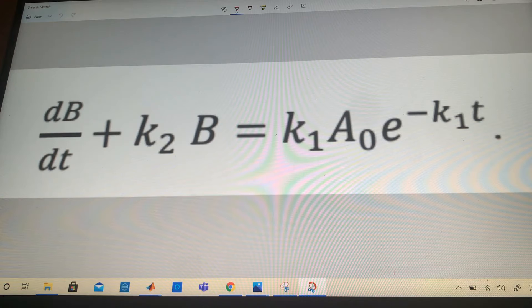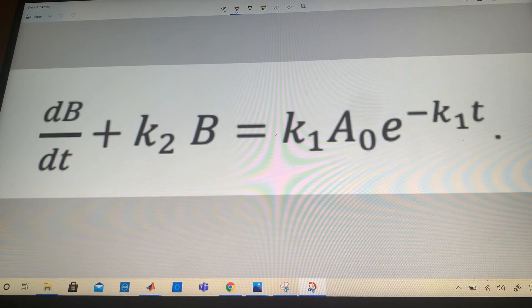Our differential equation representing blood alcohol content as a function of time is shown here. This contains three variables: A0, K1, and K2.